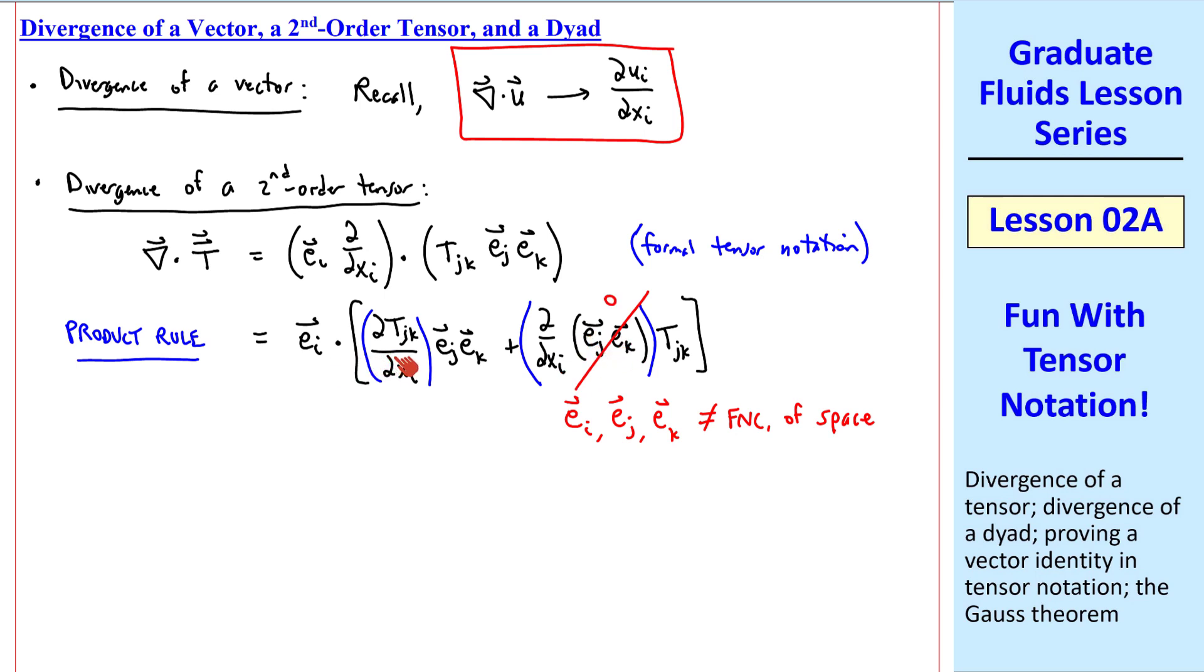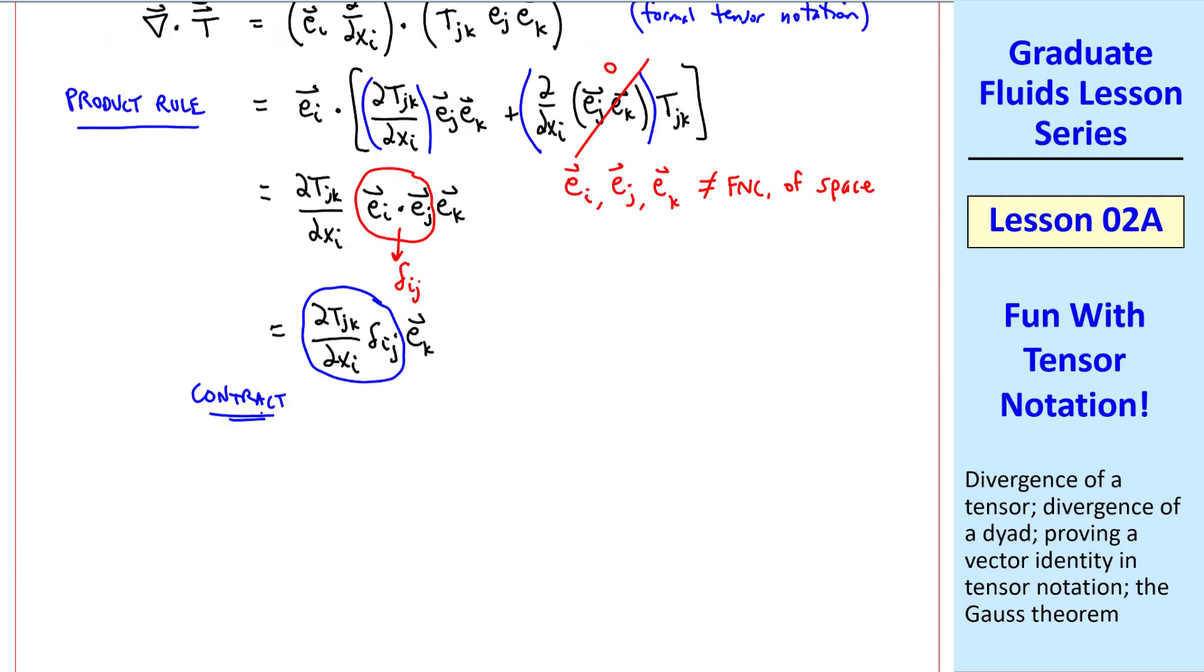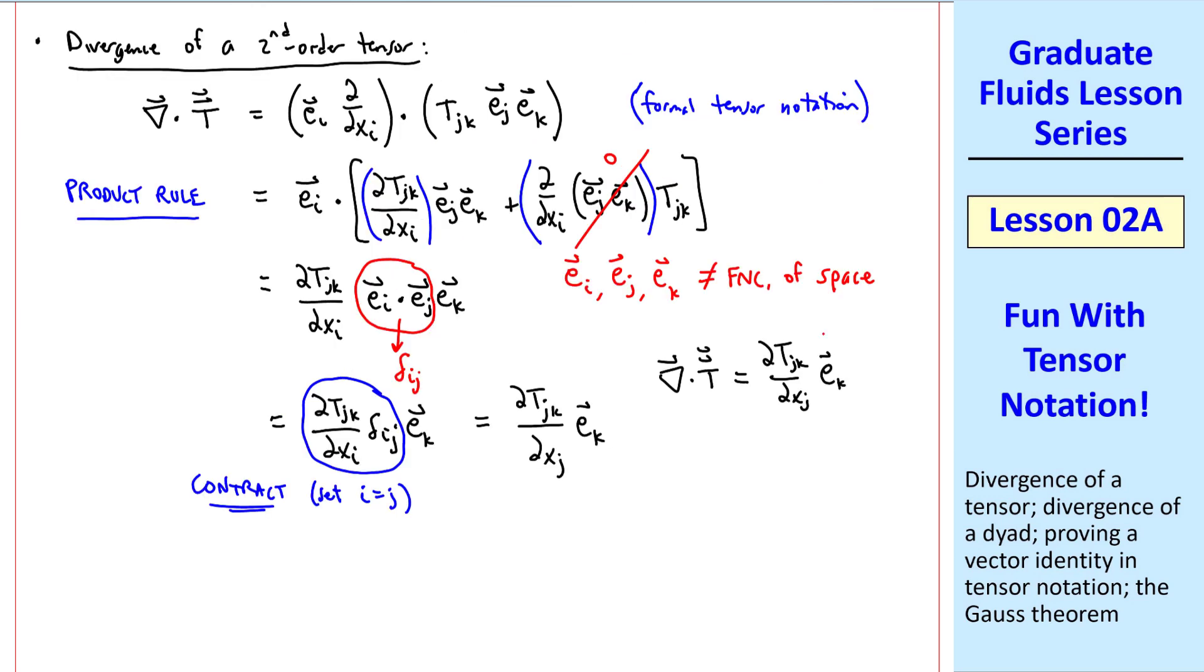But these unit vectors are not a function of space, so the spatial derivative of any unit vectors is zero. Next, when we write this out in formal tensor notation, the tjk is just the scalar component of the tensor and is not affected by the dot product, so this term can come outside the dot product. But from a previous lesson, this is equal to delta ij. But in this grouping of terms, we have a repeated i and a repeated j with a delta, so we can contract by setting i equal j. In other words, this term is non-zero only when i equal j. So this becomes del tjk del xj ek. So our answer in formal tensor notation is this.